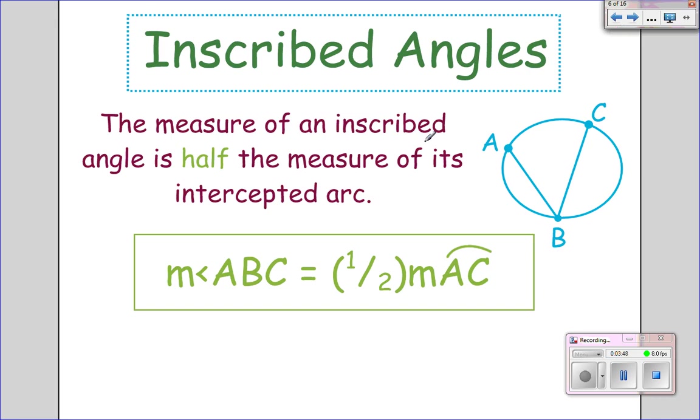Here's the theorem. The measure of an inscribed angle, this right here, is half the measure of its intercepted arc. So the measure of angle ABC is half of the arc.